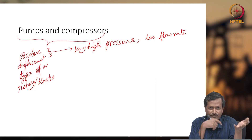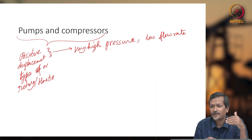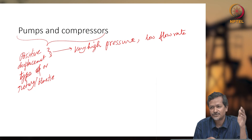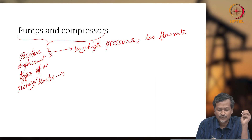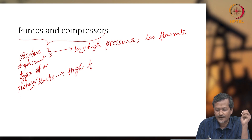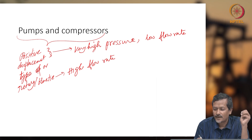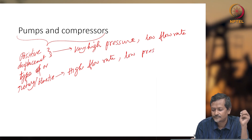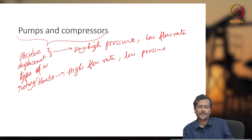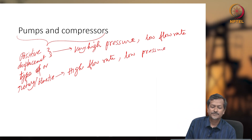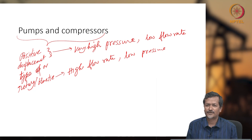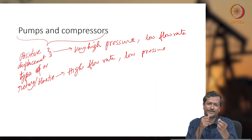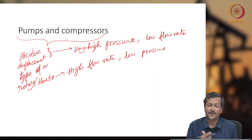If you look at kinetic or centrifugal pumps, these are very commonly used in household applications, lawn applications, and many industrial applications. These have high flow rate but relatively low pressure compared to positive displacement pumps. One example of a positive displacement device is an injection syringe — a certain amount of fluid is taken and pushed. Everyone is familiar with the COVID vaccine: a small amount of fluid is taken and pushed into your body — that is also a positive displacement type.